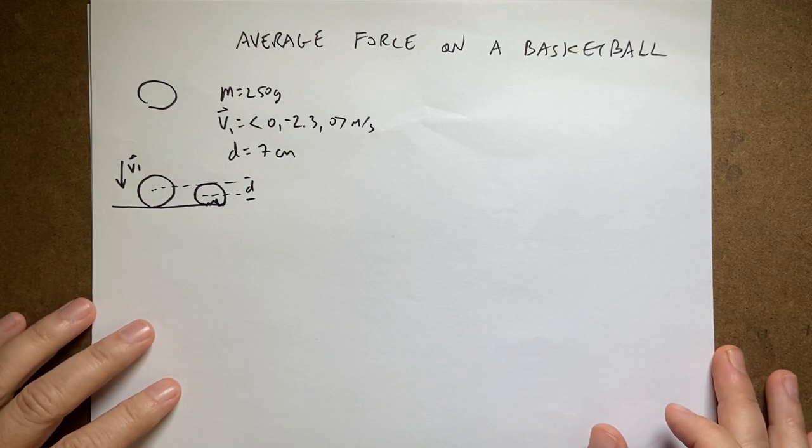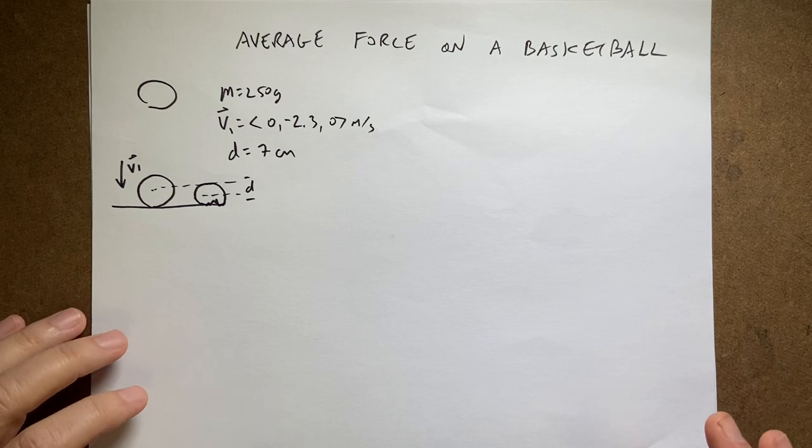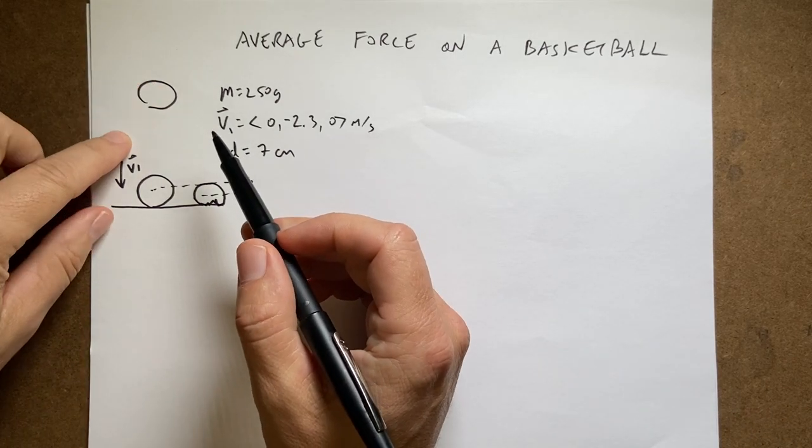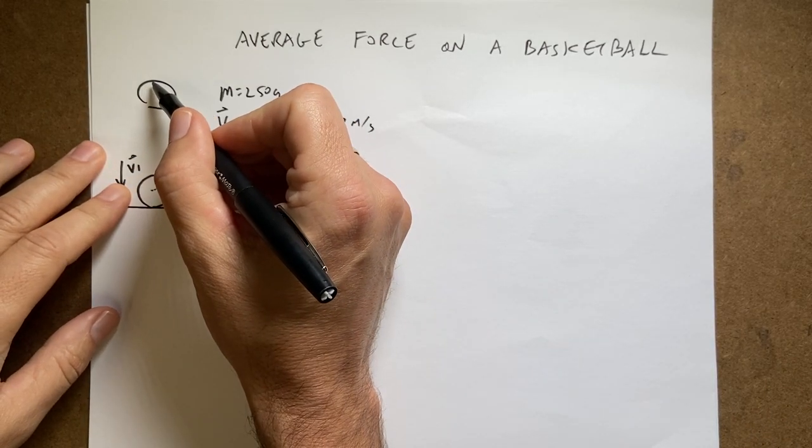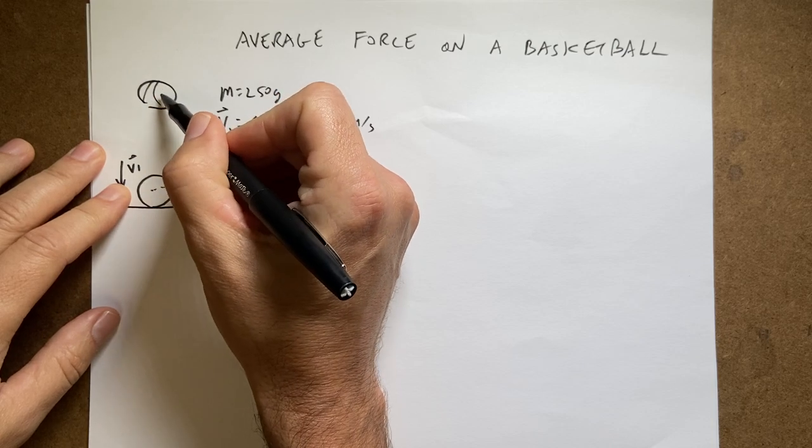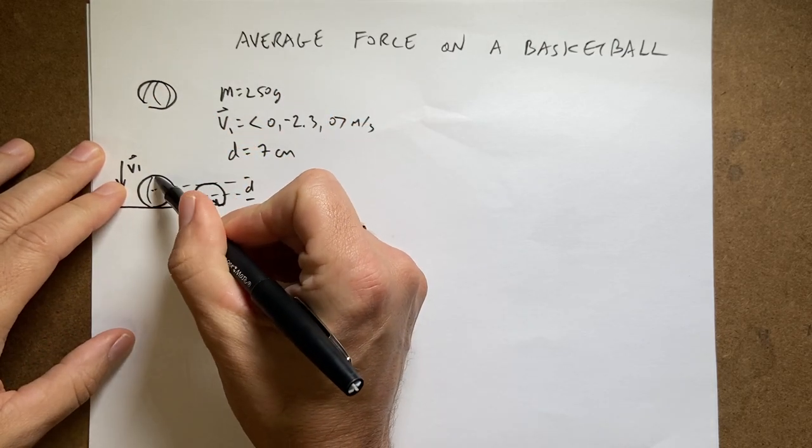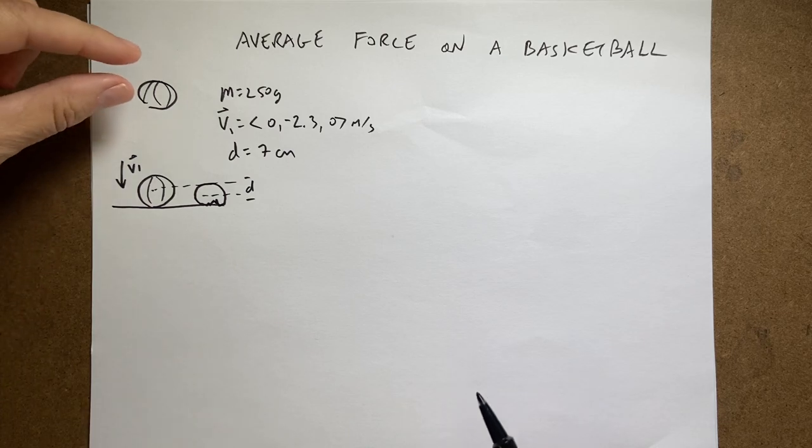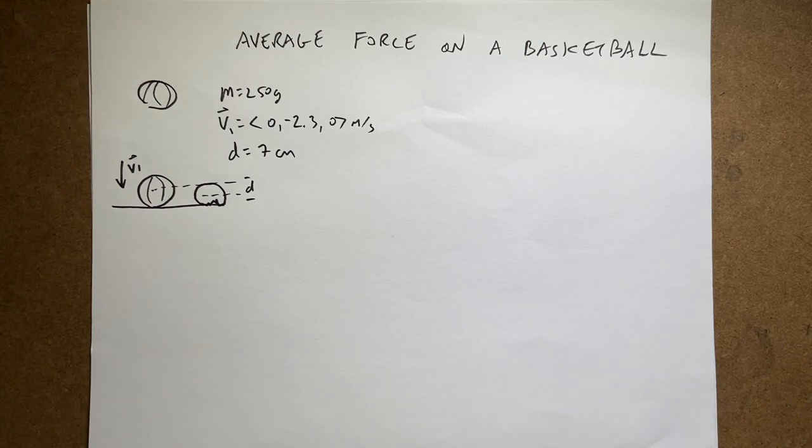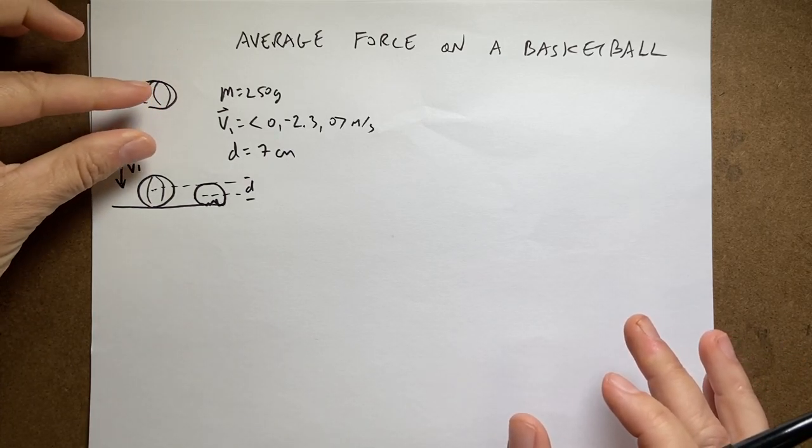Okay, here is another problem with the momentum principle. I have a basketball and I want to draw it. It looks like this, there's my basketball. Put the lines in there, it looks like a basketball now. It's a flat basketball, I just made that up for fun.